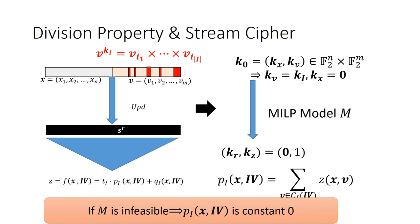The division property description to a stream cipher is quite straightforward. The r-round initialization is the same as that of block cipher. It only differs that there is an additional output bit. So the final vector is kr, kz and is dedicatedly assigned to zero-one. The corresponding MILP model M is constructed and solved accordingly. If M is infeasible, we know the superpoly Pi is constant zero.